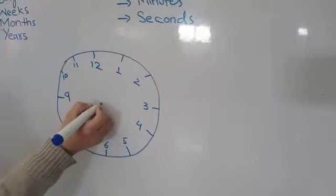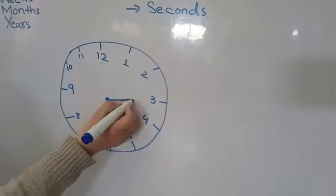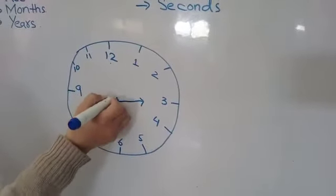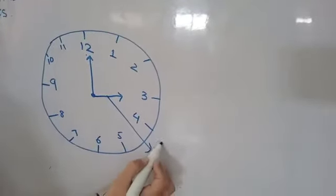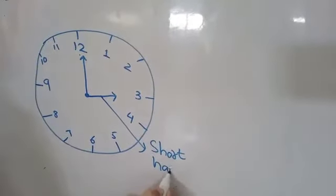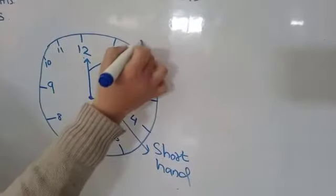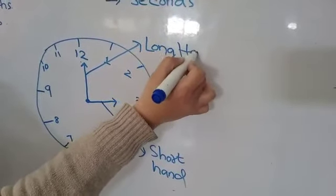So in clock we have two hands. One is short hand, second one is long hand. This is our short hand of the clock. And this is long hand of the clock.